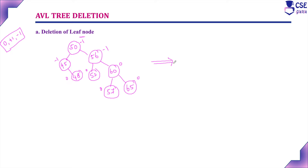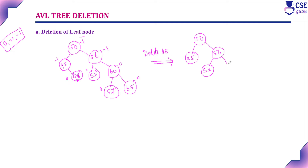Now we will delete the leaf node 48. After deleting node 48, the remaining tree has 45 on the left and the right subtree contains 56, 52, 60, 57, and 65. Checking the balance factor: all leaf nodes are 0; node 60 is -1; but the root node 50 has left subtree height 1 and right subtree height 3, giving a balance factor of 1 - 3 = -2. So the tree is unbalanced at node 50.